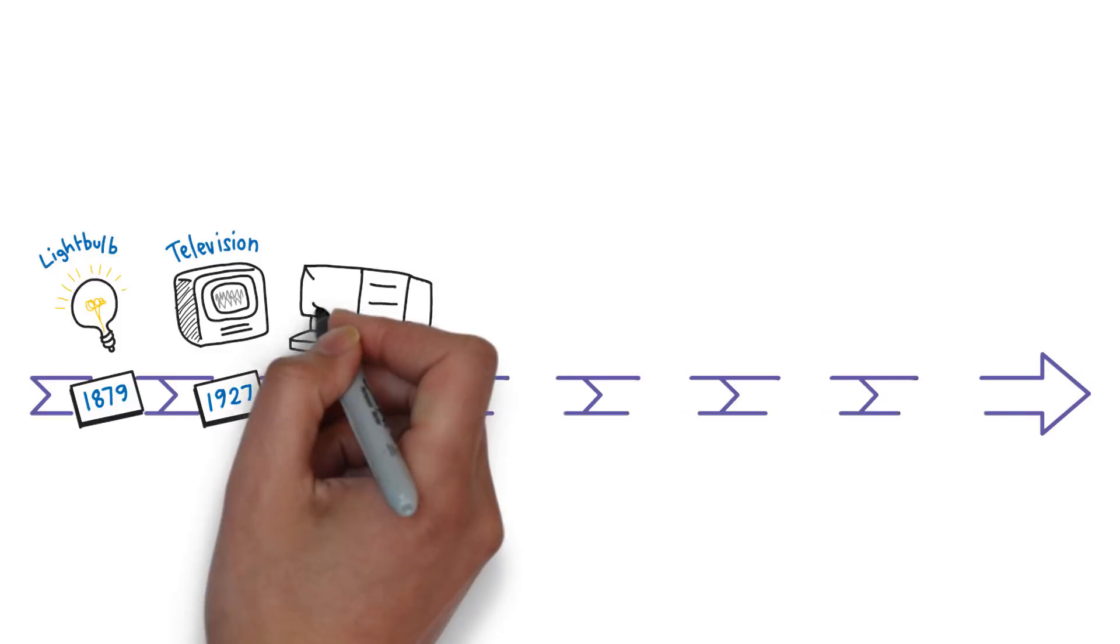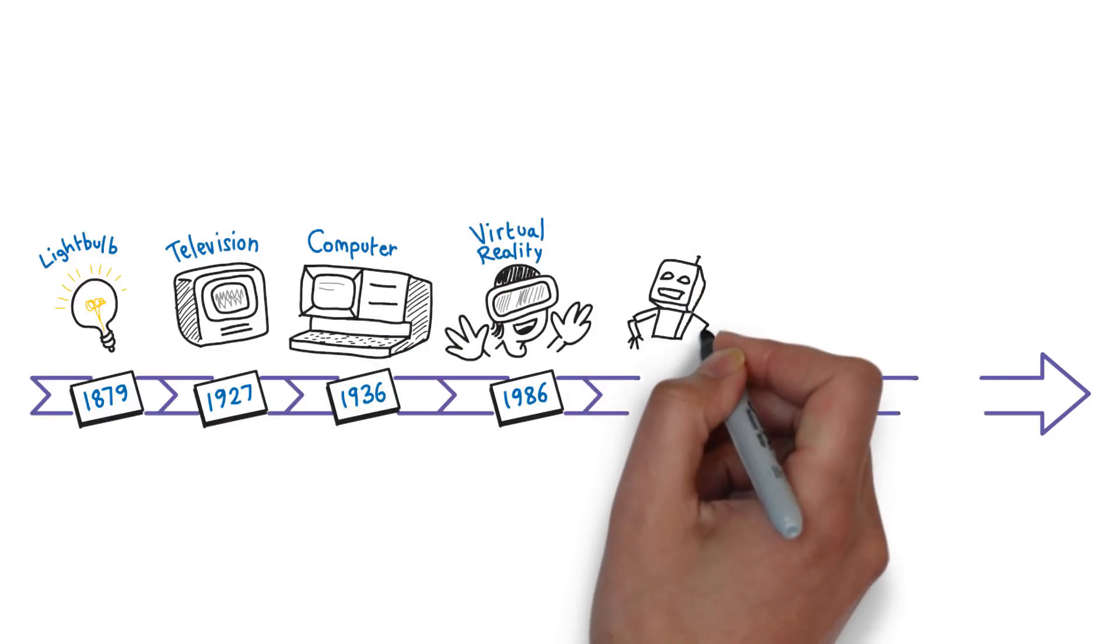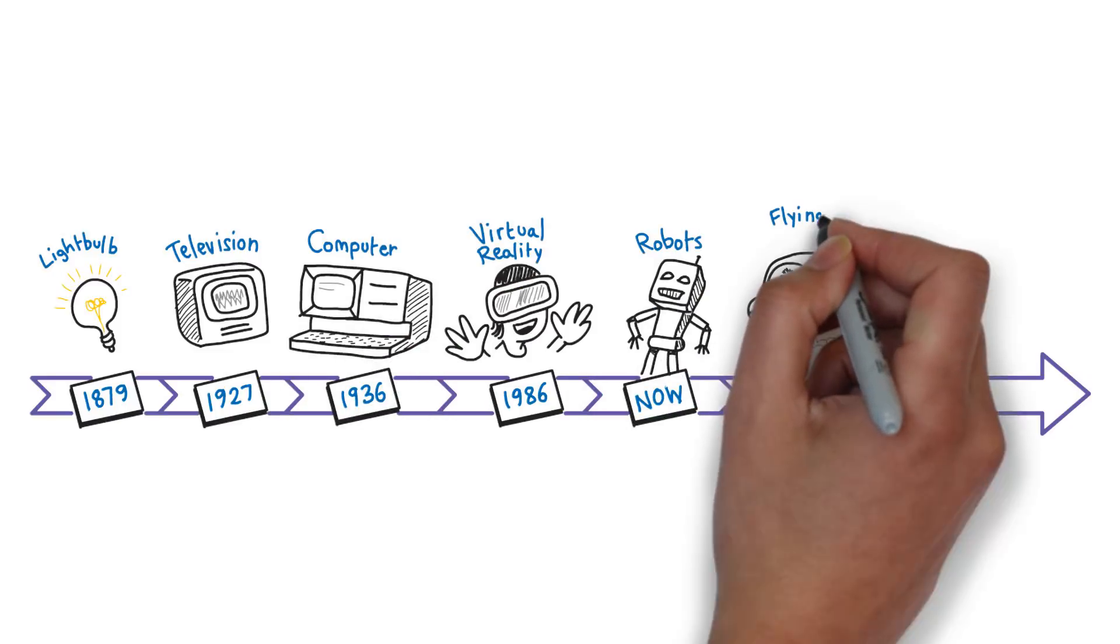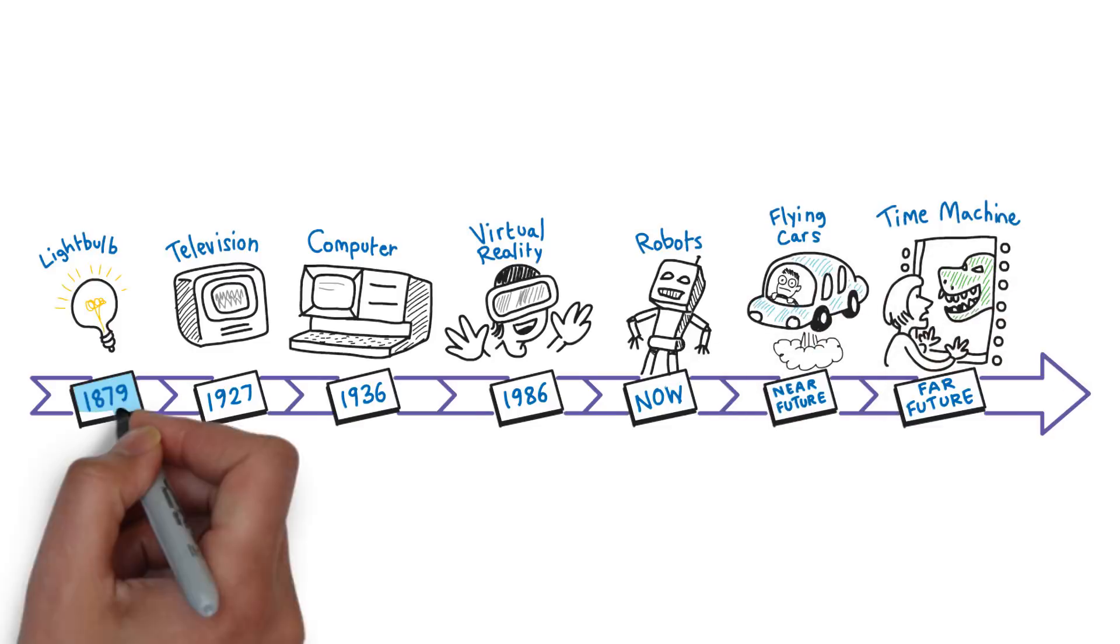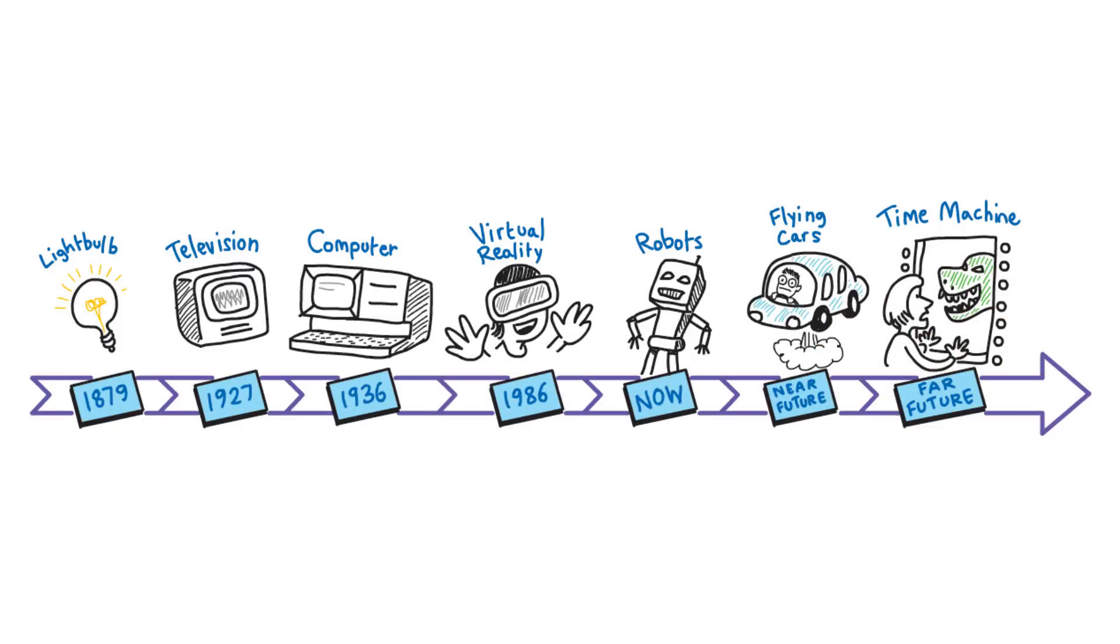As science and technology have developed, we are more able to predict and quantify the future. But there is still no certainty in what might happen tomorrow, next year or years from now.